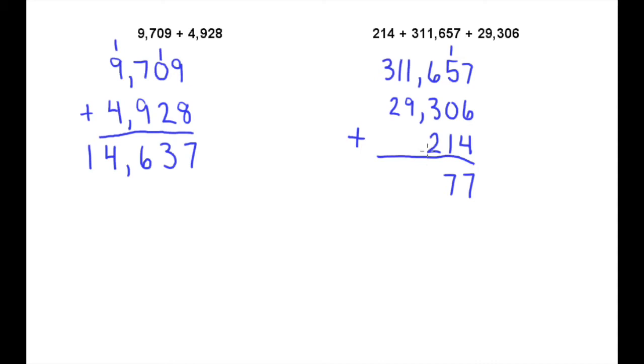1 plus 1 plus 9 is again 11, carry the 1 over here. Then 1 plus 1 is 2, plus 2 is 4. And then finally there's nothing to add to this 3. It's really 3 plus 0 plus 0, right? So we just put our 3 right there, giving us an answer of 341,177.